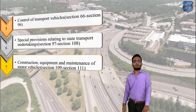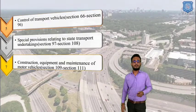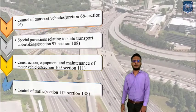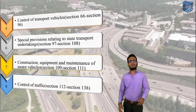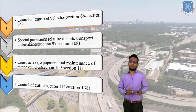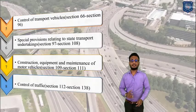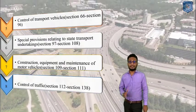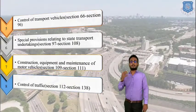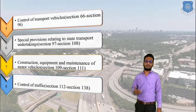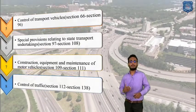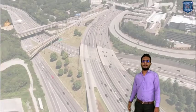Chapter number 7 covers construction, equipment, and maintenance of motor vehicles. Automobile manufacturers directly refer to this chapter, which contains section 109 to section 111. Chapter number 8 covers control of traffic, addressing specific traffic issues and how to avoid them, containing section 112 to section 138.